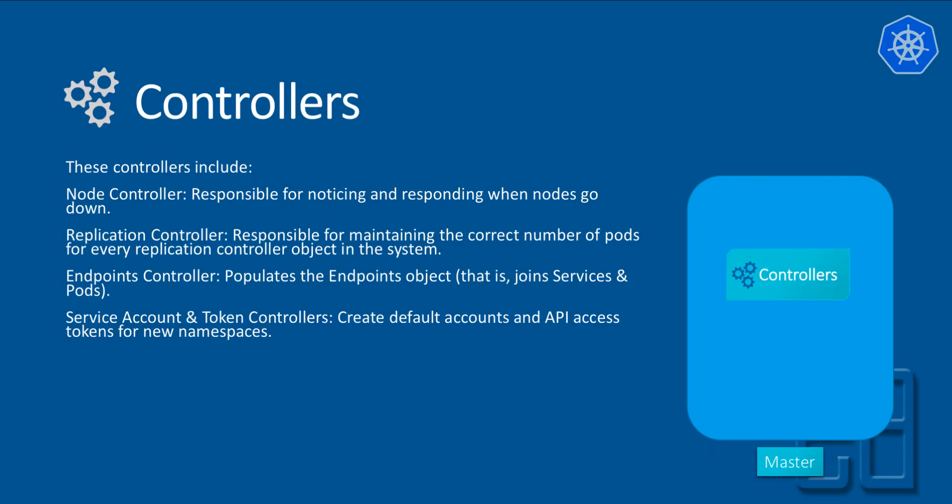The next component the master has is controllers. These include the node controller, replication controller, endpoint controller, and service account and token controllers. The node controller is responsible for noticing and responding when nodes go down. The replication controller maintains the correct number of pods for every replication controller object. The endpoint controller populates endpoint objects joining services and pods. The service account and token controller creates default accounts and API access tokens for new namespaces.